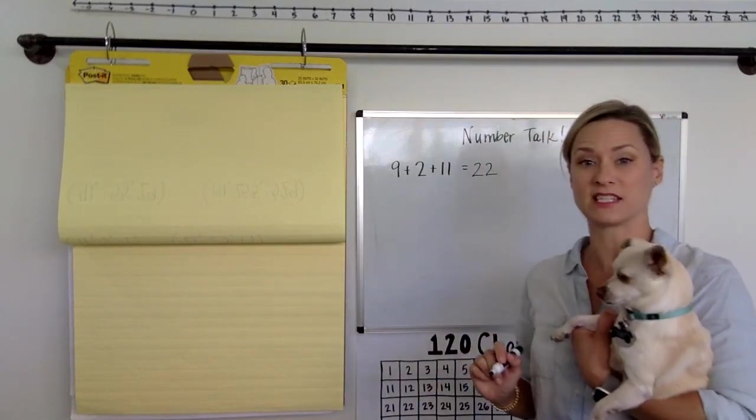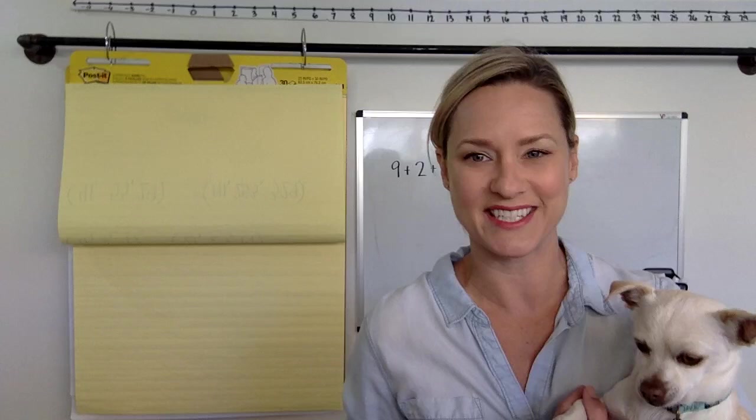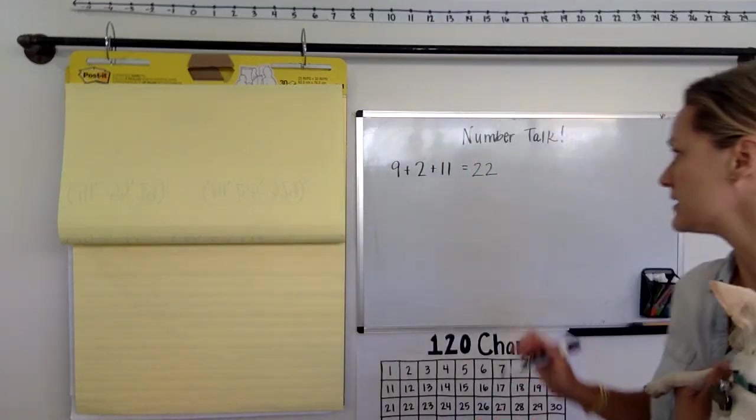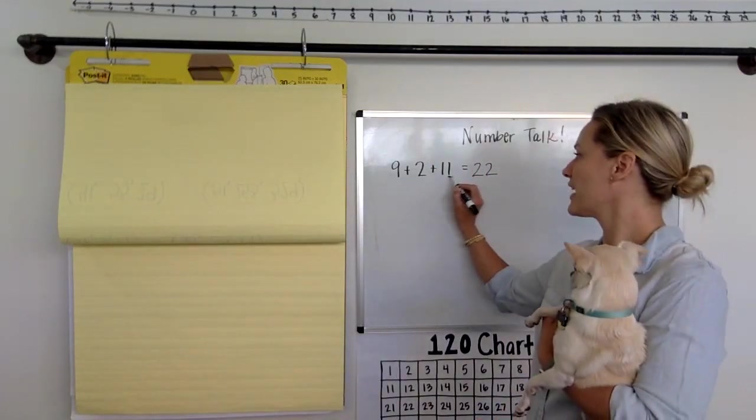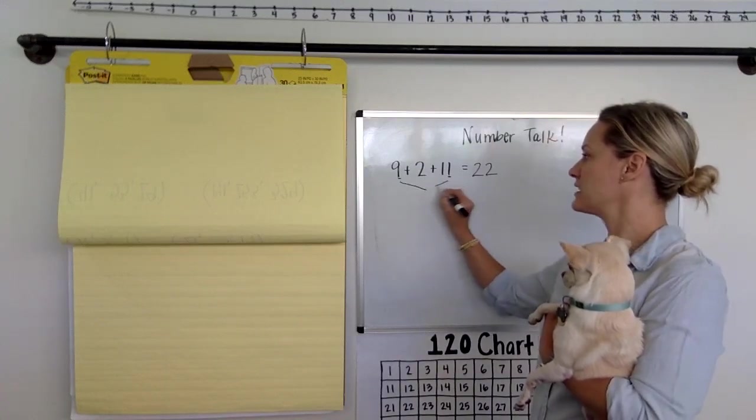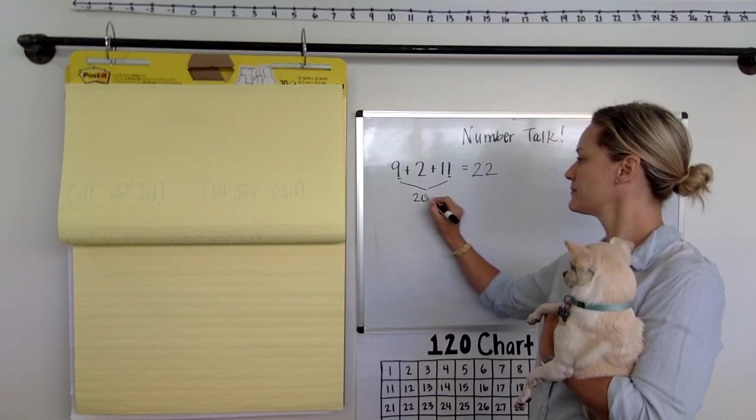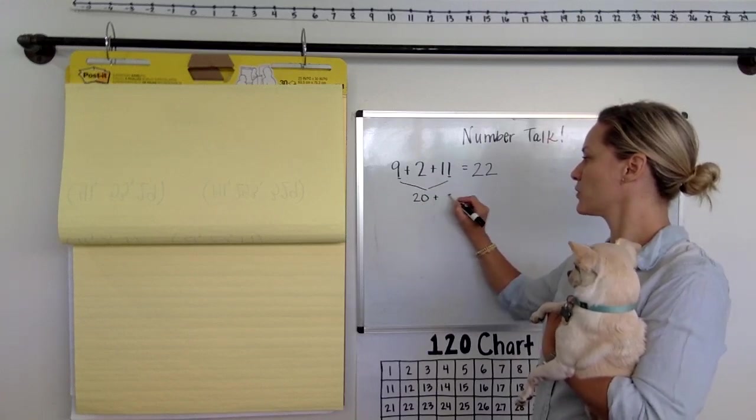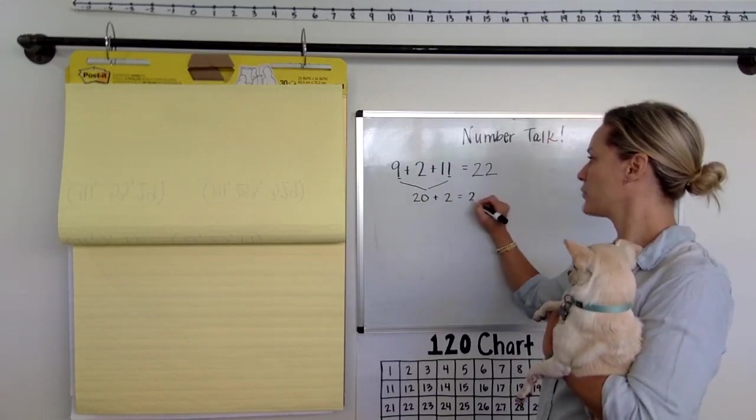So I'm going to guess that some of you thought about friends of 10. So 9 plus 11, I'm going to guess you knew that if you added 9 and 11 together, that would make 20. And then you just had two more. So that made 22.